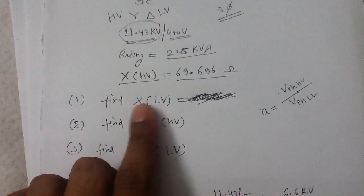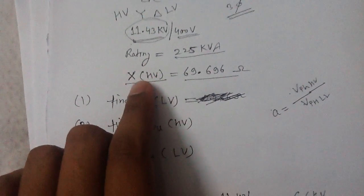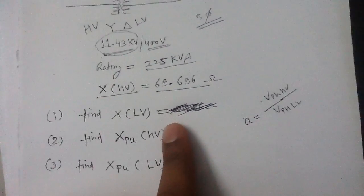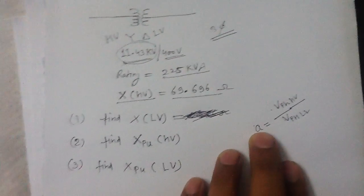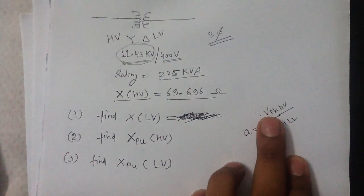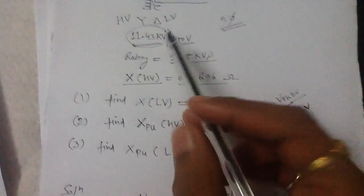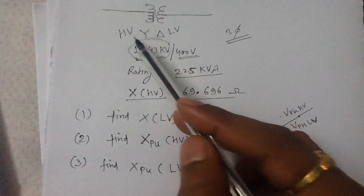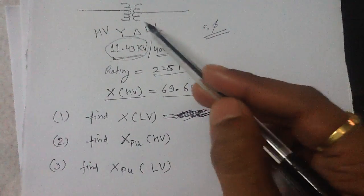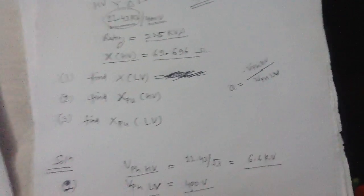To find the reactance referred to the LV side, we need to transform the HV side reactance to the LV side. We need a transformation ratio, which is always greater than one. The transformation ratio is the phase voltage of the HV side divided by the phase voltage of the LV side. The HV side is connected in star, so the phase voltage is 11.43 kV divided by root 3. The LV side is connected in delta, so its phase voltage is 400 volts.